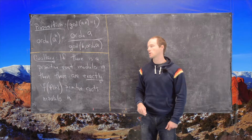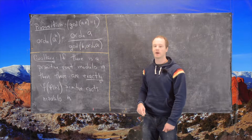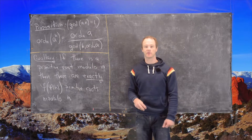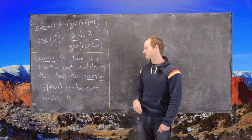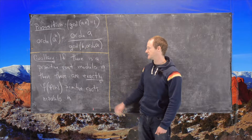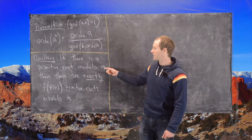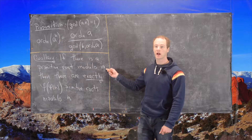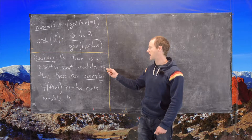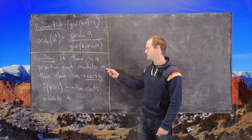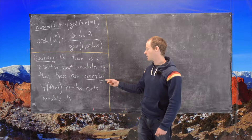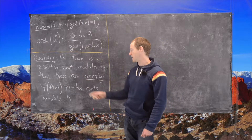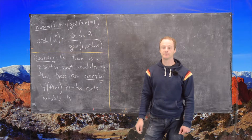There's a super important corollary to this proposition that allows us to know exactly the number of primitive roots modulo n. If there is a primitive root modulo n — and remember we're not guaranteed to have one — but if we have one, then there are exactly φ(φ(n)) primitive roots modulo n.